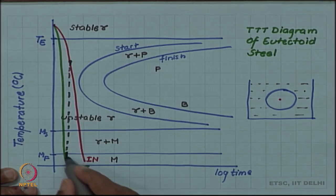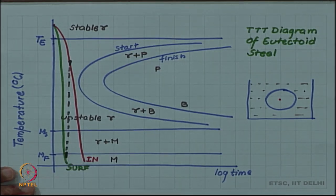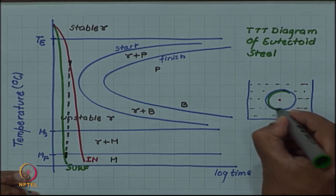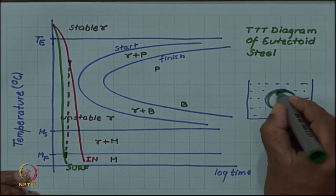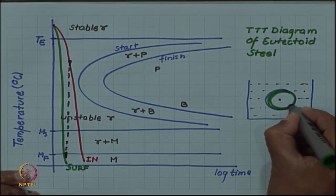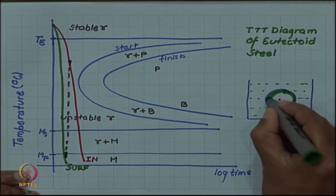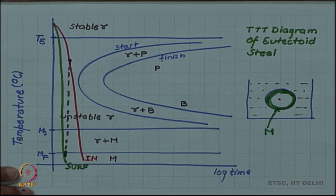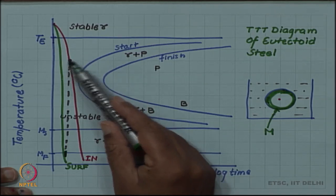So the surface has dropped below MF temperature and has formed martensite, surface can form martensite, but inside is still warm and is still austenite.